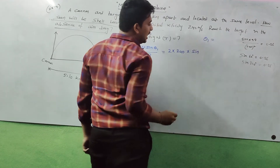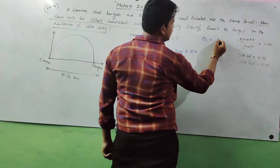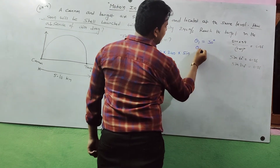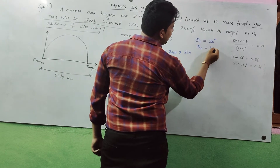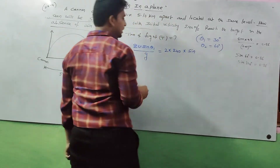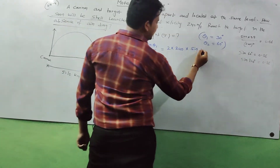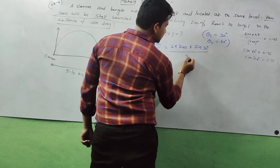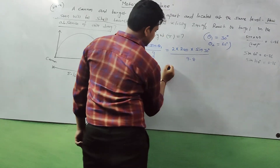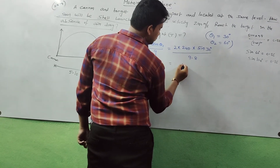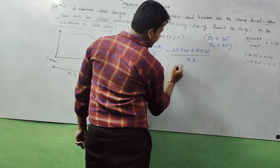For T1: θ1 = 30 degrees. So T1 = 2 × 240 × sin30° / 9.8. Since sin30° = 1/2, this gives T1 = 240 / 9.8, which is approximately 24.5. Wait — working through the arithmetic: 2 × 240 × 0.5 / 9.8 = 240 / 9.8, giving T1 ≈ 2.4 seconds.